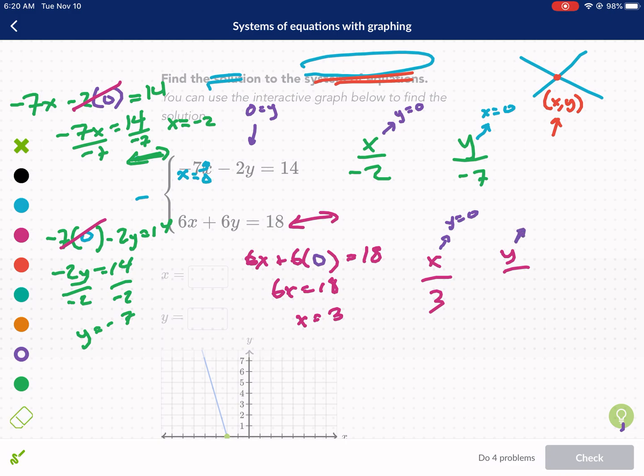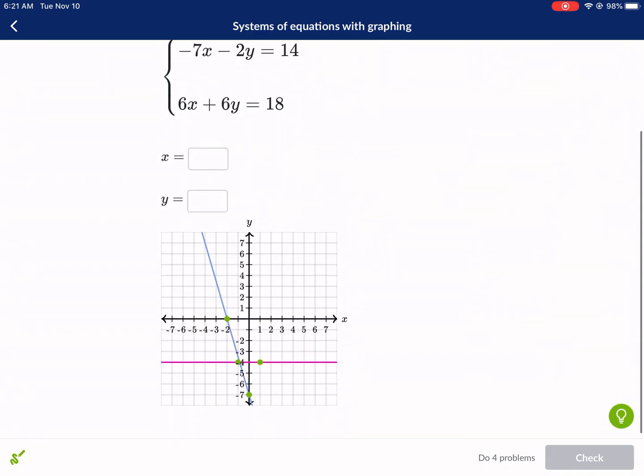For the y intercept, I'm going to plug in x equals 0. I can essentially just cross it off and now I'm just left with 6y equals 18. Well that is a much easier problem to do. So we get y equals 3. We get y equals 3 for the y intercept and x intercept is also 3. So just covering it up with your finger or hand is another way to think about it. So for the pink equation we got 3 and 3.